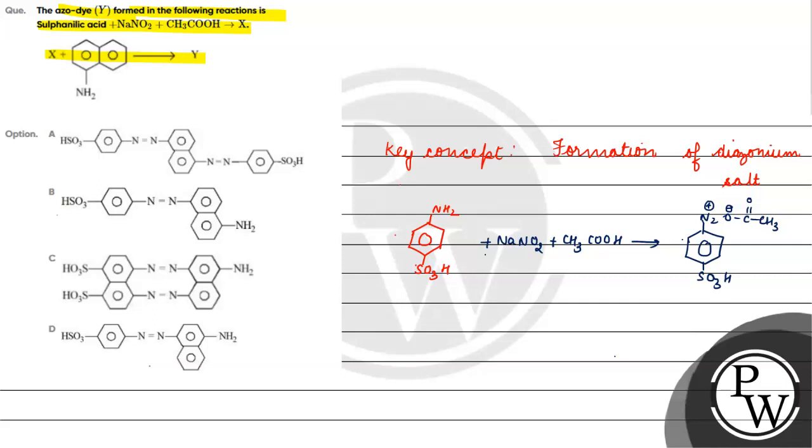Then what will this reaction bring? This reaction will result in N2 plus O O minus, which is a diazonium ion.